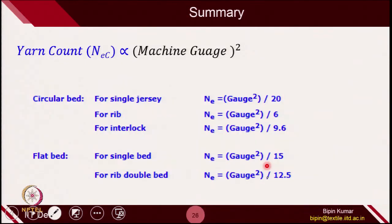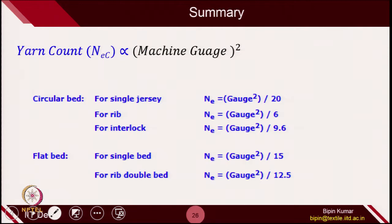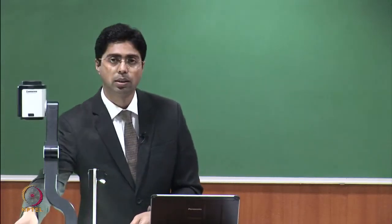With this, I am stopping this particular lecture. Just a small summary: we have seen how this small relationship is useful in selecting the right count for a particular machine. In the next class, we will look at some other relationships related to production, which is also very useful in finding out how much fabric we can produce on the machine — this is important from a manufacturing point of view. Thank you very much, and catch you in the next class.